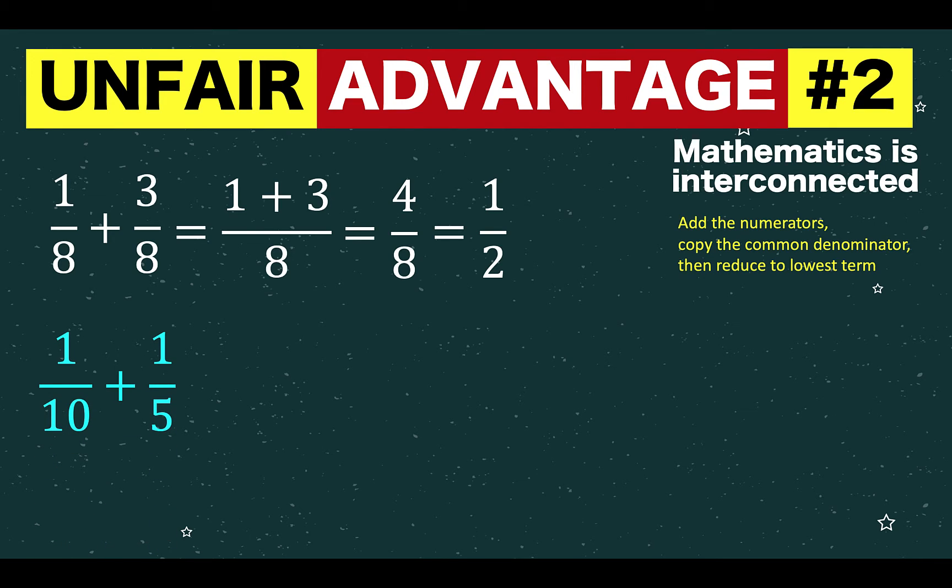Now, what if we have 1 over 10 plus 1 over 5? Some students would think, oh, this is different. These are similar fractions. These are dissimilar fractions. And therefore, I'm going to think of a different rule in order to answer problem number two. And so you go to your notes and you study what's the next rule.